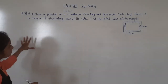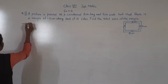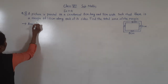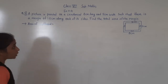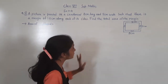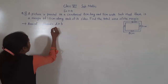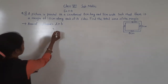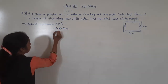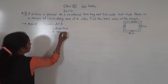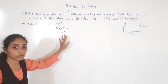So first we will find the area of the cardboard. Area of cardboard: length is 8 cm and breadth is 5 cm, so length multiplied by breadth: 8 cm × 5 cm = 40 cm square. So the area of the cardboard is 40 cm square.